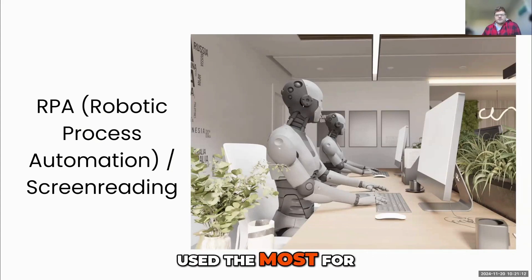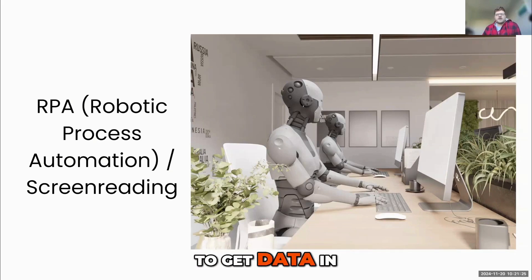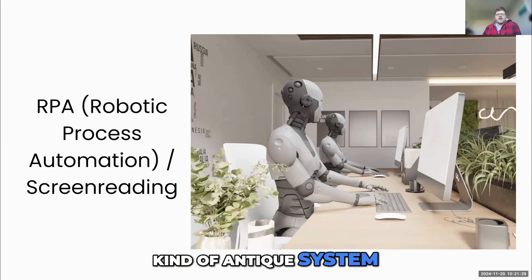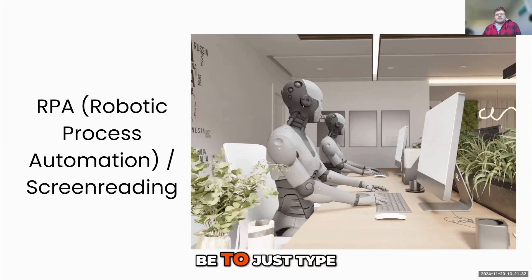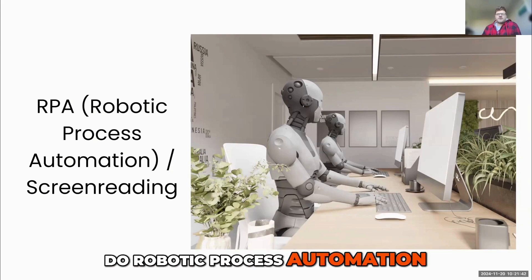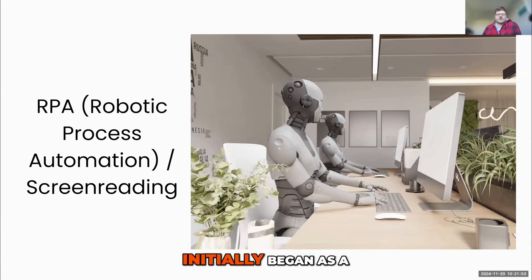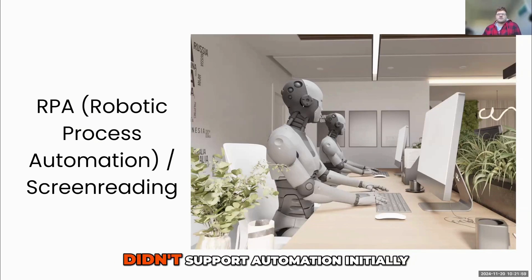In the past, this has probably been used the most for corporate use of legacy systems. If you use a modern computer system, typically there are going to be API calls that you can use to get data in and out and make queries. If you're using some kind of antique system, the only way to interface with it may be to just type things in on a keyboard. So rather than have people sitting around typing on keyboards all the time, it's potentially better to do robotic process automation and have a computer essentially clicking on things for you. Robotic process automation initially began as a technology to allow automations within legacy programs that didn't support automation.